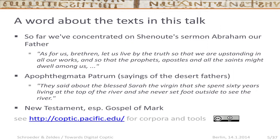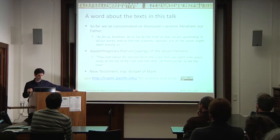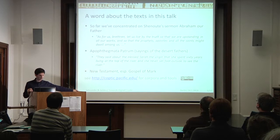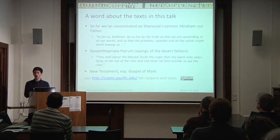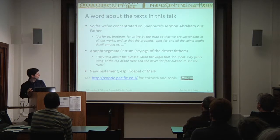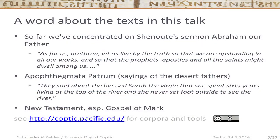Other texts look very different. The Apophthegmata Patrum, or 'Sayings of the Desert Fathers,' is a collection of short stories about hermits living in the desert. Here's an example about a woman: 'They said about the Blessed Sarah the Virgin that she spent 60 years living at the top of the river — meaning the Nile — and she never set foot outside to see the river.' She spent 60 years in a cave as a sign of her holiness, realizing the ideal of asceticism. The third text we've used is the New Testament, mostly the Gospel of Mark. These corpora are available under a Creative Commons license — you can just download them.